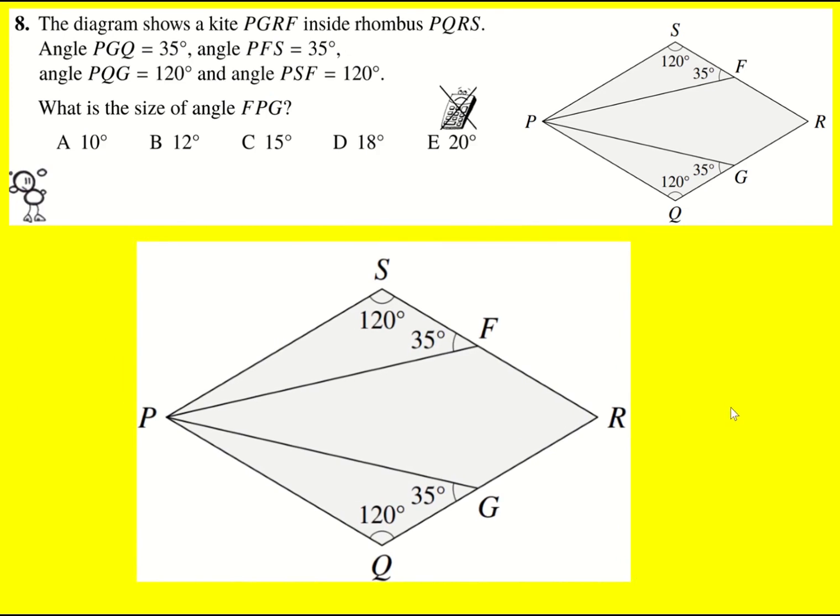We have a kite inside of a rhombus. This here is the kite and the rhombus on the outside. So because it's a rhombus, there's a little fact we can use and that is that the angles here and here must add up to 180, which means this is going to be 60, and that is also going to be 60 in total.